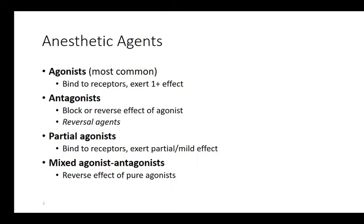We might use antagonists to block or reverse the effect of an agonist — those are called reversal agents. If I give an agonist that causes sedation and have an antagonist available to reverse that sedation, that becomes a very safe way to do anesthesia. We can also have partial agonists, which partially bind to receptors and exert a milder effect. Mixed agonist-antagonists can reverse pure agonists but also have a partial agonist effect.